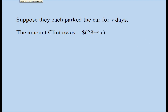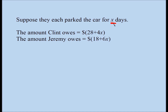What happens with the next gentleman? Jeremy owes — if he parked his car for x days, remember the question says they parked their cars for the same number of days — Jeremy used the west side lot and Clint used the east side lot. The west side lot charges $18 no matter what, then $6 per day. If you park the car for x days, the daily charge would be 6 times x. The question also says the two gentlemen paid the exact same amount of money, which tells us these two quantities must equal each other.